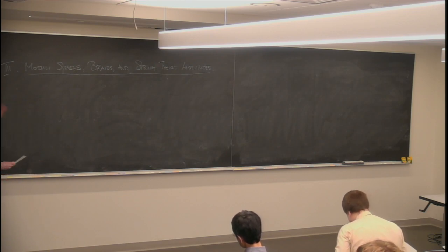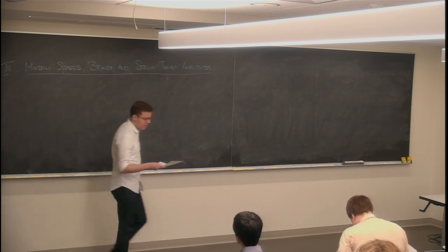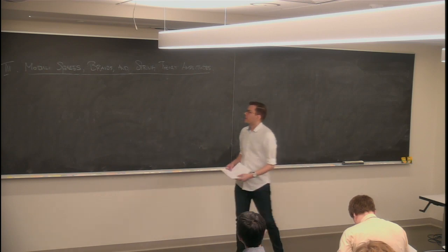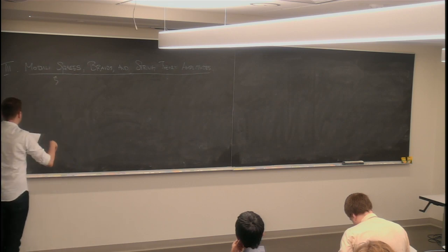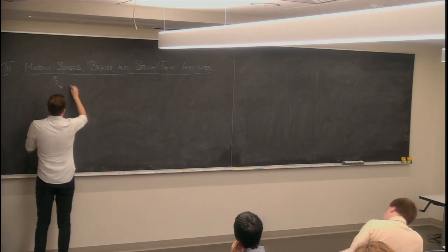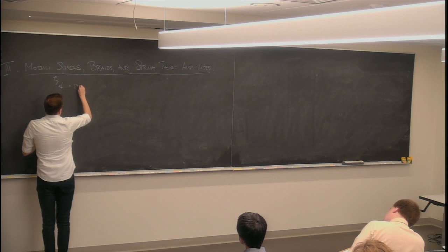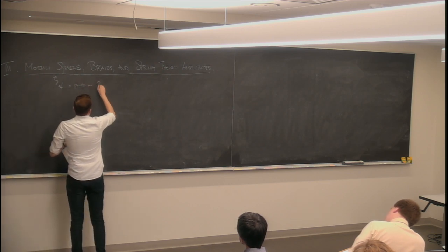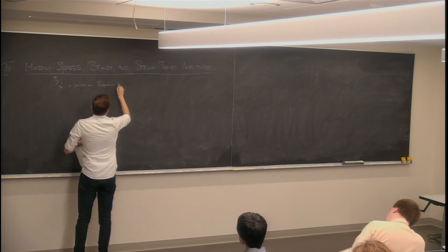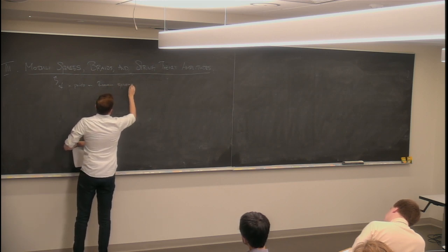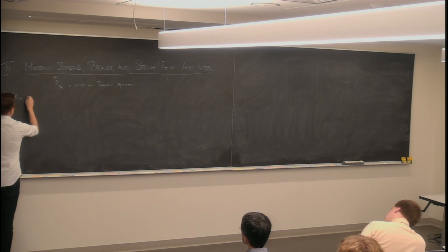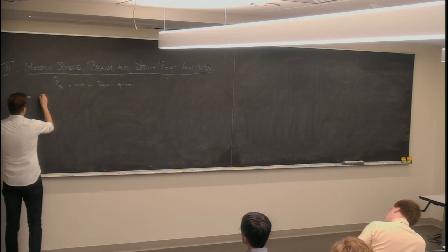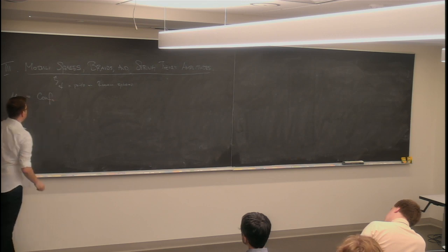In this talk, we'll be discussing the generalization of everything we've seen in the previous talk to moduli spaces of G0 surfaces. By moduli space, I mean moduli space of punctures on three-minus spheres — G0. I'll denote it MOF, where O stands for G0, N for the number of punctures, and moduli space is the configuration space of punctures.